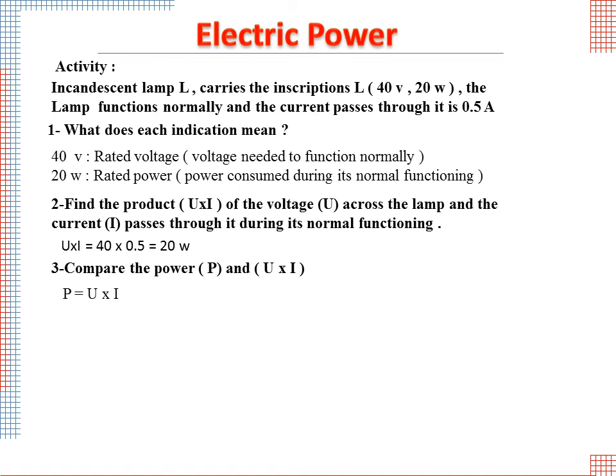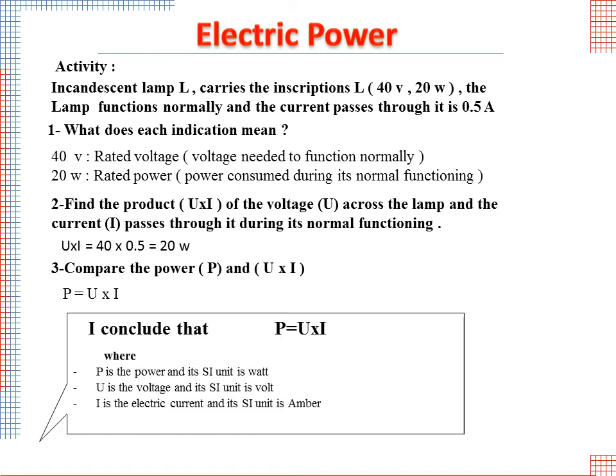We observe that P equals U times I. I conclude that P equals U times I, where P is the power and its SI unit is watt, U is the voltage and its SI unit is volt, and I is the electric current and its SI unit is ampere.